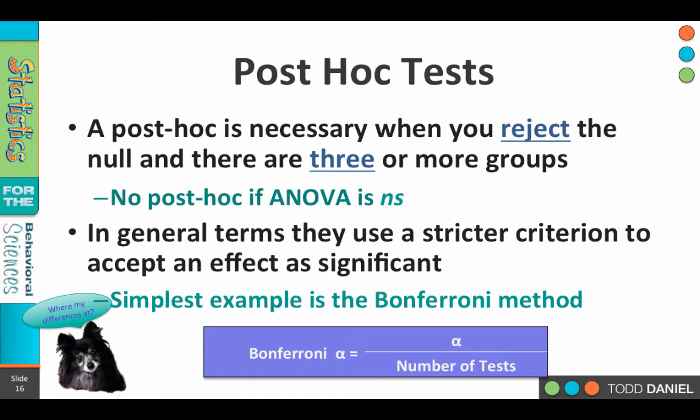In general terms, what a post hoc test will do is tighten up the criterion by which we would accept an effect as being significant. There are multiple ways in which we could conduct a post hoc test. The simplest one is called a Bonferroni correction. This is where you take your alpha level, typically 0.05, and divide by the number of tests. So if you were running three groups — comparing sample one, sample two, sample three — we would divide 0.05 by three, and that would be our new alpha level. If we were running five tests, we would divide 0.05 by five, so each test would have to have a significance level of 0.01 in order to be considered statistically significant.